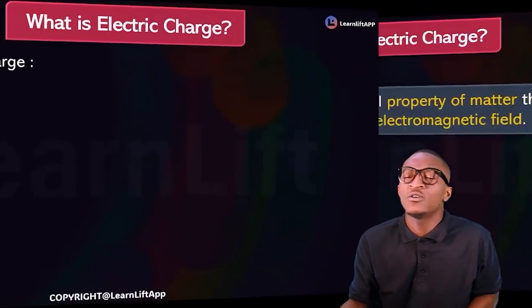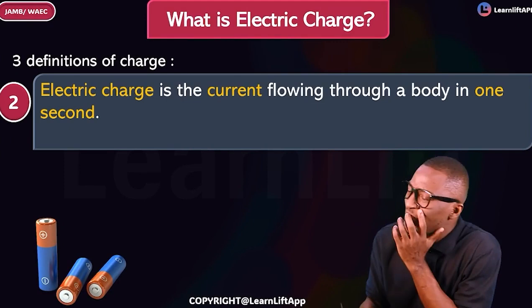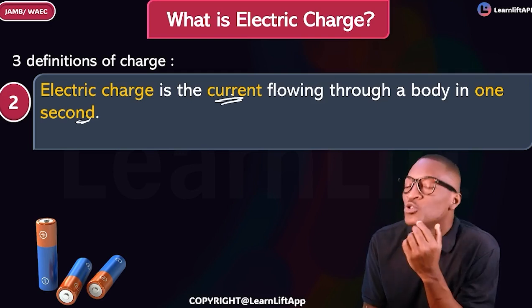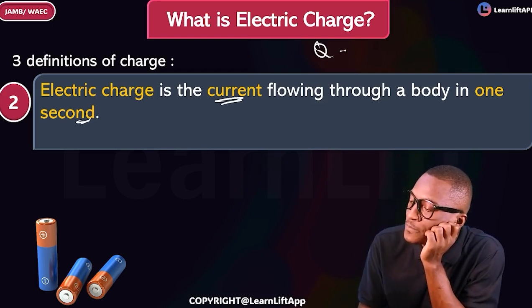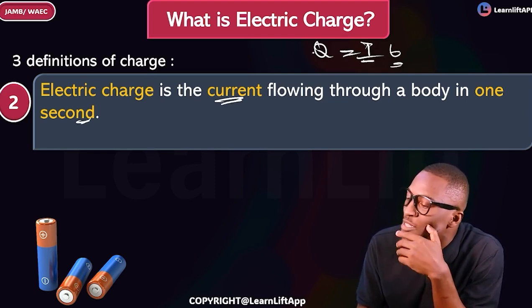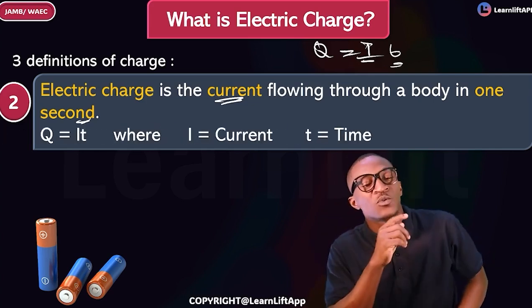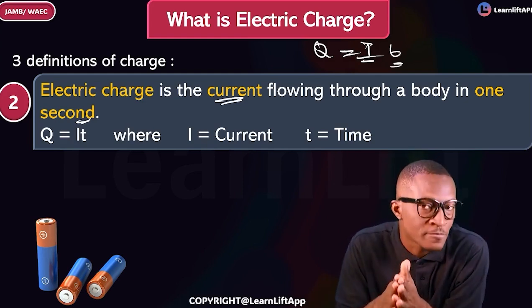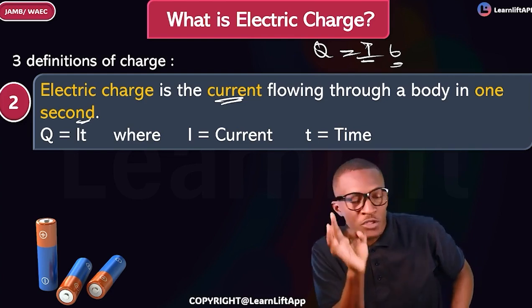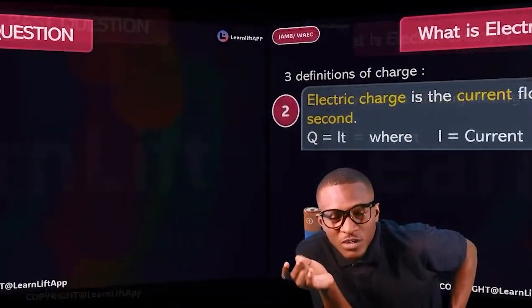The second definition of electric charge: electric charge can be defined as the current flowing through a body in one second. That's why we say Q = IT, where I is the current and T is time. The current flowing through a body in one second is called electric charge, where Q = IT.